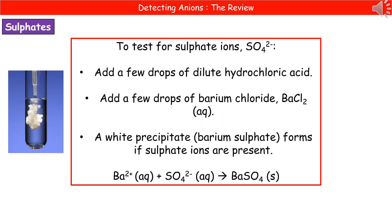The reason we get that white precipitate is because we're making barium sulfate. The reaction shown is: the barium ion Ba²⁺ reacts with the sulfate ion SO₄²⁻ to make barium sulfate, BaSO₄.